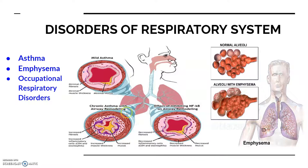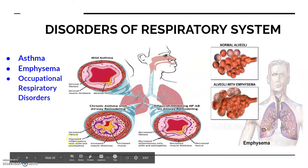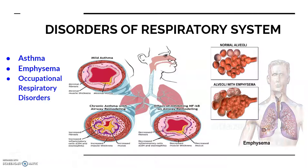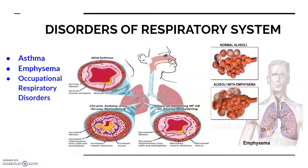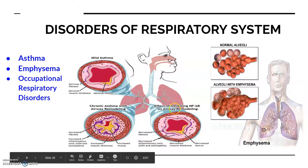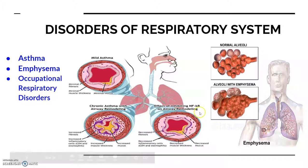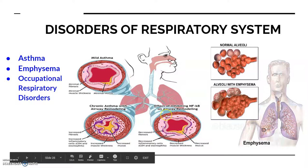Chronic asthma involves airway remodeling, where increased fibrosis happens inside the blood vessels, along with increased inflammatory cells, increased muscle thickness, and increased mucus secretion. That is why a breathing problem starts occurring. The effect of inhibiting NF on airway remodeling involves medical terms used in the treatment of asthma.